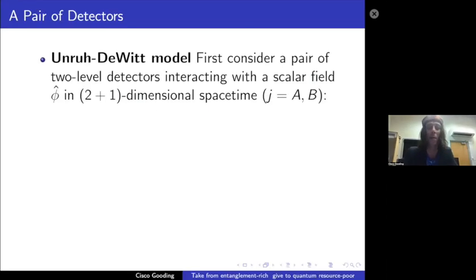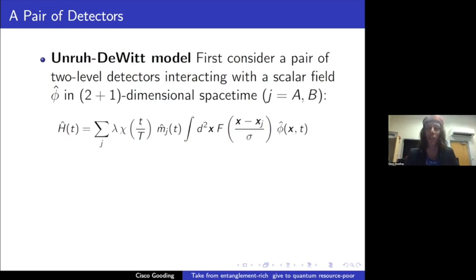The basic idea that we're trying to implement experimentally is this entanglement harvesting protocol that a lot of people are familiar with in this crowd. It was mentioned in a couple of previous talks, both today, yesterday, and Monday. And the components of it that we are going to care about for my purpose are basically just this general interaction Hamiltonian to describe a pair of Unruh-DeWitt detectors.